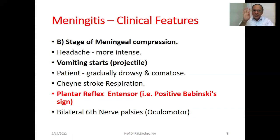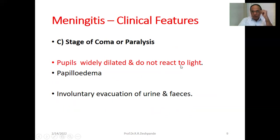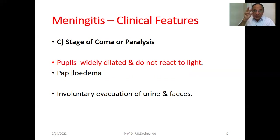There is also bilateral sixth nerve palsy, that is oculomotor problem. Third stage is the stage of coma — deep unconsciousness. The patient cannot be aroused. This is very serious — paralysis occurs, pupils are widely dilated and do not react to light, constriction of the pupil will not occur, papilloedema is present on ophthalmoscopy, and there is involuntary evacuation of urine and fecal matter.